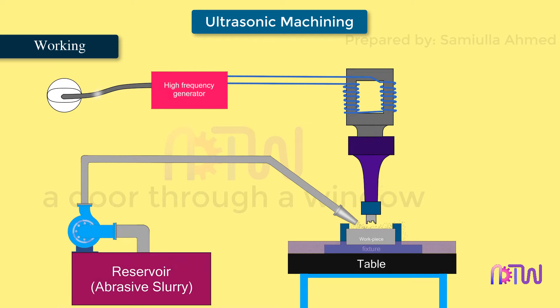Working: When AC supply is provided to the high frequency generator, it amplifies the frequency of the input supply up to 20 to 40 kilohertz. This high frequency input supply is fed to the electromechanical transducer which converts this energy into ultrasonic vibration, thus making the tool vibrate in longitudinal direction. The horn is the intermediary between the transducer and the tool holder. The horn is used to amplify the amplitude of the vibration generated by the transducer and then guides and focuses these vibrations onto the tool.